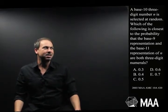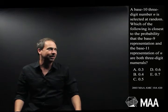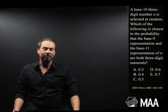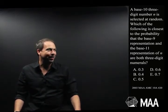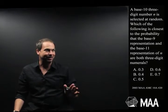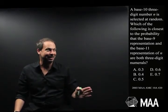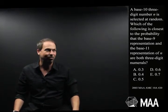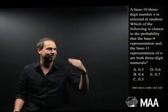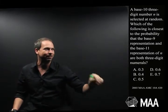A base-10 three-digit number n is selected at random. Which of the following is closest to the probability that the base-9 representation and the base-11 representation of n are both three-digit numerals? And I've got some answers here like 0.3, 0.4, 0.5, 0.6, 0.7.